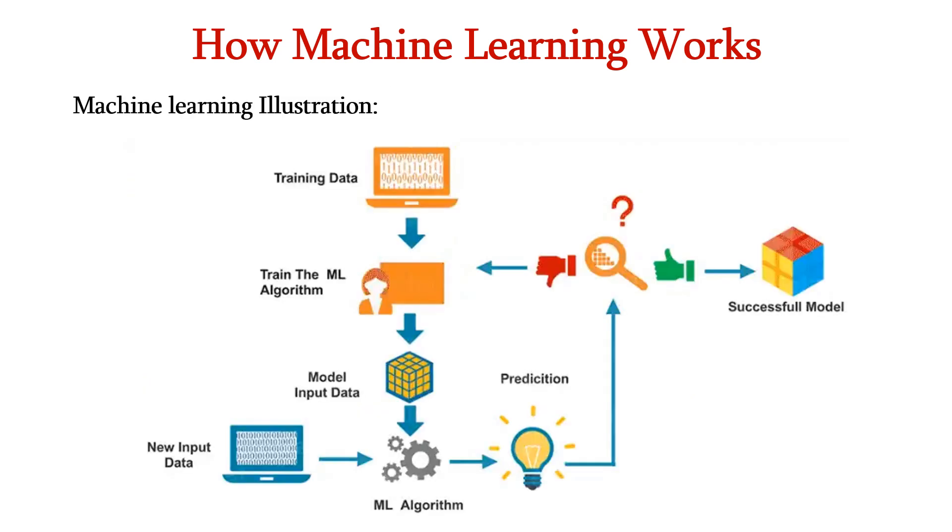Now, let us see the diagram which illustrates the concept of machine learning. We are having the training data; using the data, the machine learning algorithm is trained and we have the machine learning model. After training, when we give the new input data based on the training, the ML algorithm predicts the output. If the output is satisfactory, we have the successful model. If it is not satisfactory, again we have to train the ML algorithm. This is the continuous process.